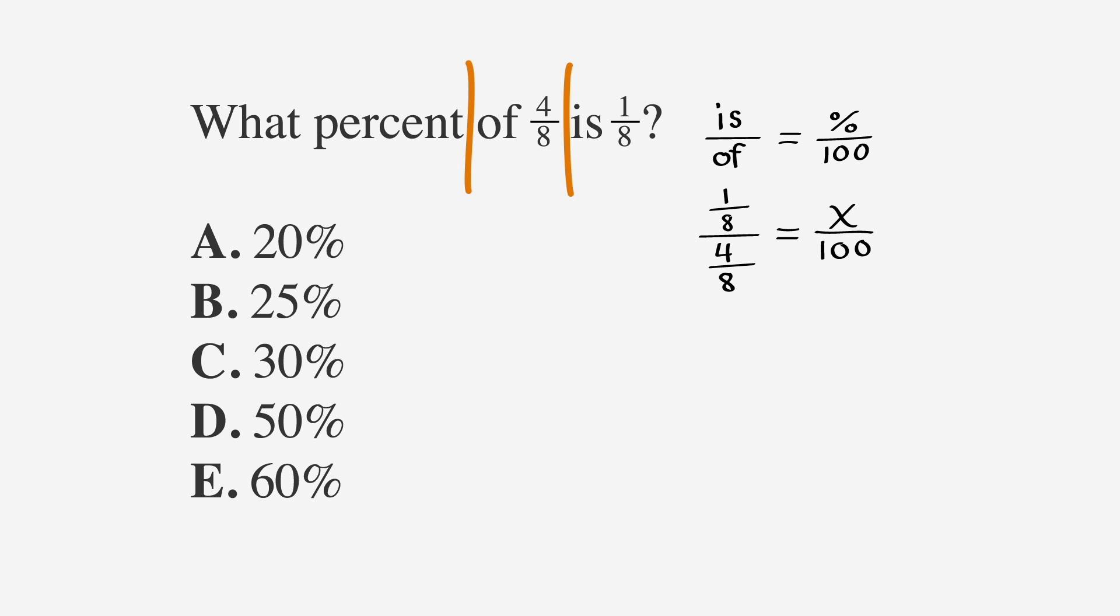If we convert that to decimals, we get 0.125 over 0.5 equals x over 100. Then we can cross-multiply and get 0.5x equals 12.5. When we divide both sides by 0.5, we end up with 25 percent, which is choice B.